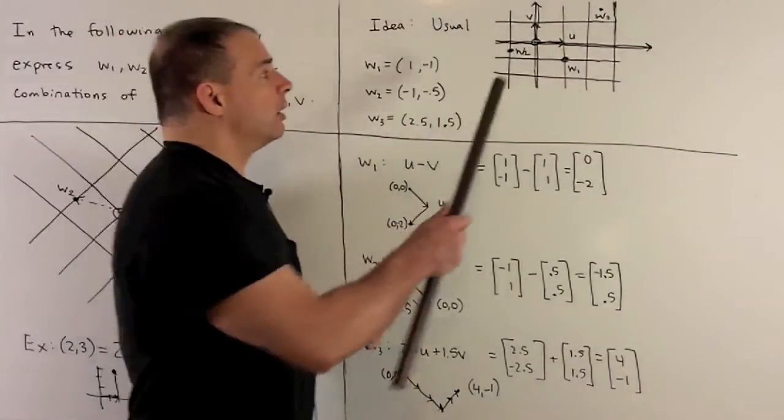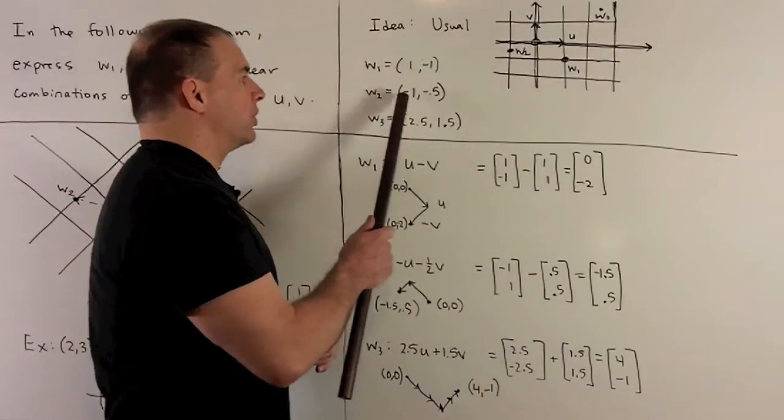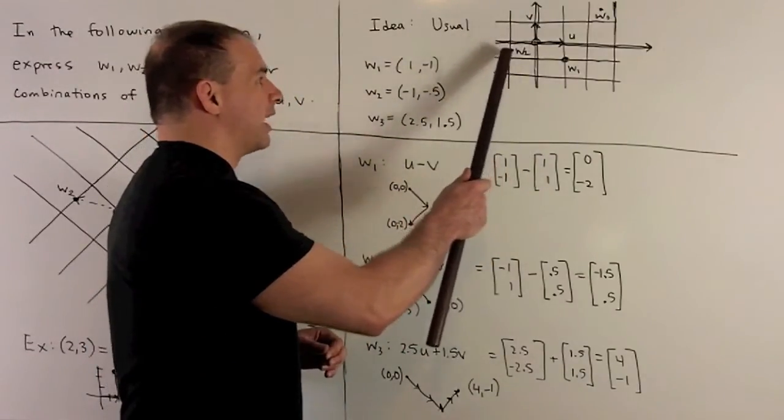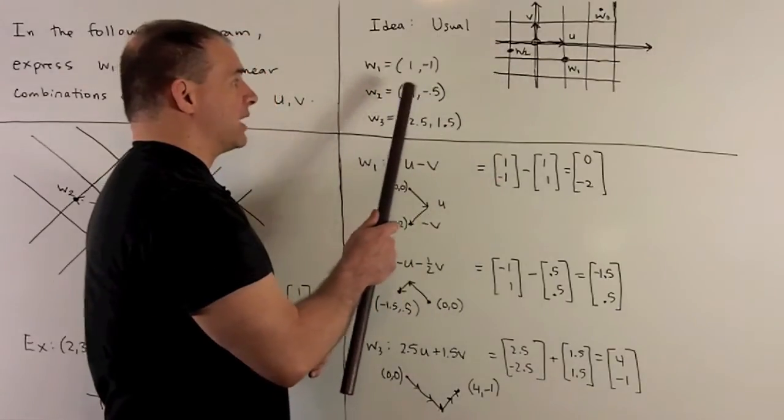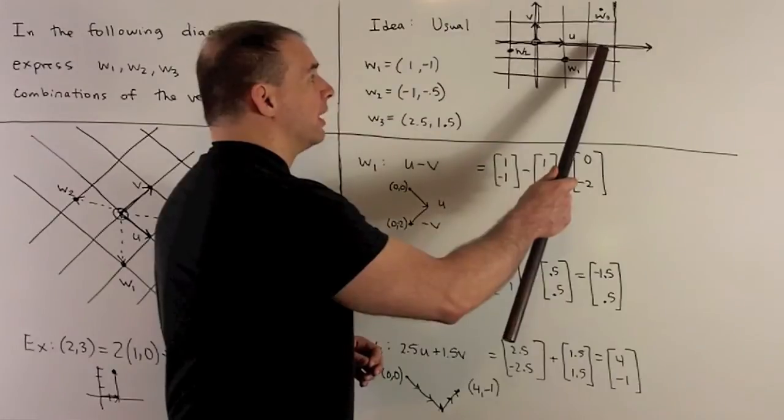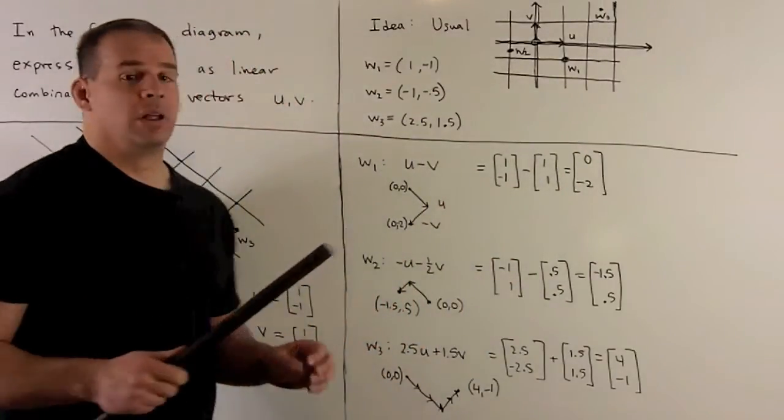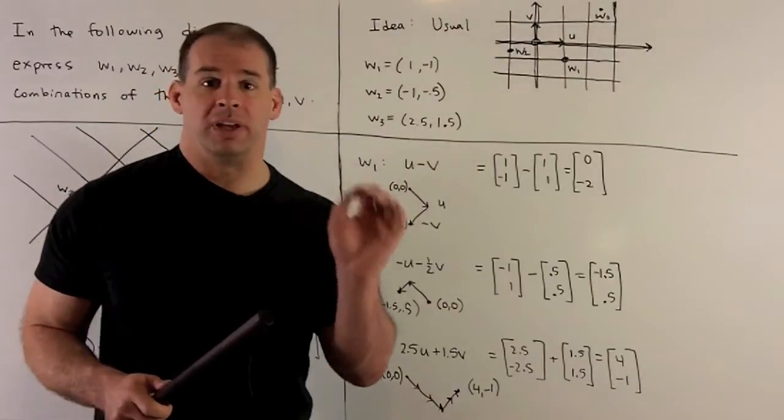For w1, we're going to have over 1, down 1, so (1, -1). For w2, we're going to come back 1, down 1 half, so (-1, -1/2). Then for w3, we're going to have 2 and 1 half, then up 1 and a half, so (2.5, 1.5). So those are going to be our coordinates in terms of u and v.